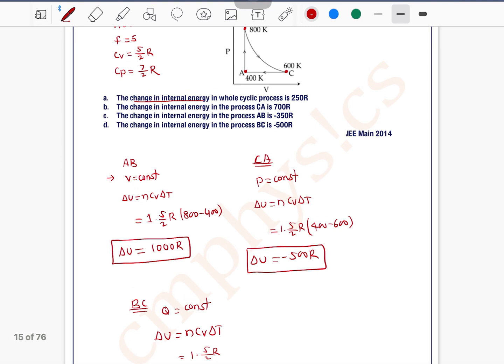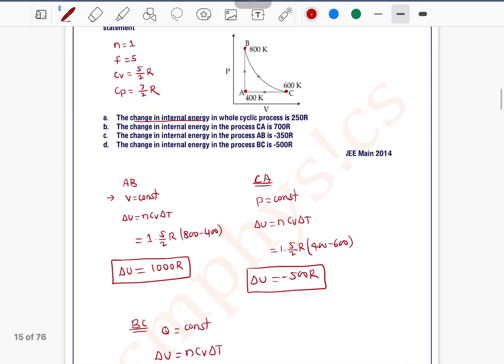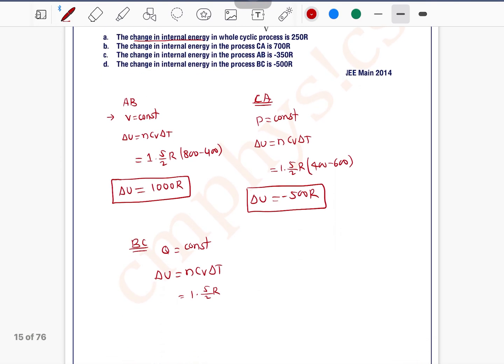N is 1, Cv is 5 by 2 R, and delta T is 600 minus 800. 600 minus 800 equals minus 200, minus 200 by 2 is minus 100, into 5 is minus 500 R. So delta U equals minus 500 R.